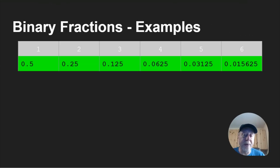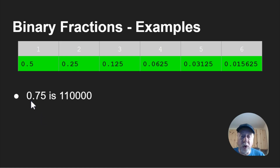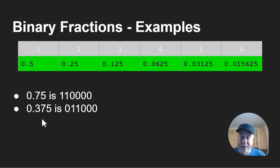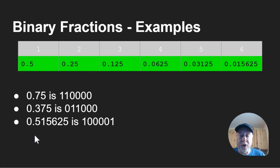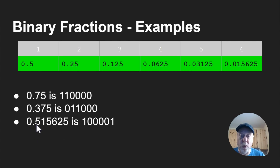Here are some examples of binary fractions. If you want 0.75, you take one half and one quarter — that's 1 1, then the rest zeros — giving you 0.75. If you want 0.375, you have no halves but you do have a quarter and an eighth, so it's 0 1 1 0 0. And if you want 0.515625, that's just 0.5 plus further fractions represented as binary digits.